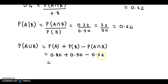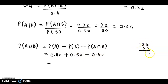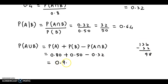We perform the calculation: 80 plus 50 gives 130, and 130 minus 32 gives 98. So probability of A union B is 0.98.